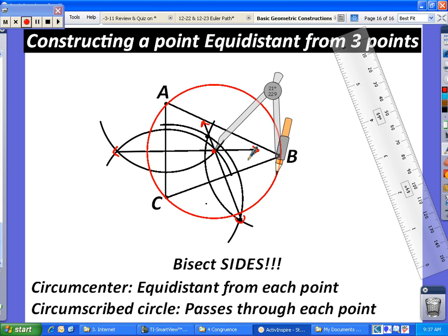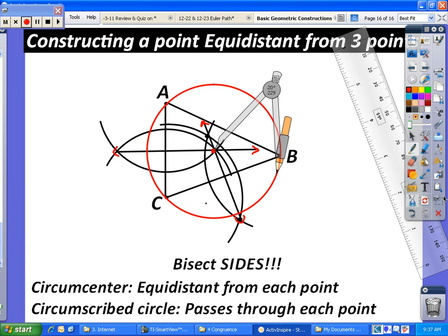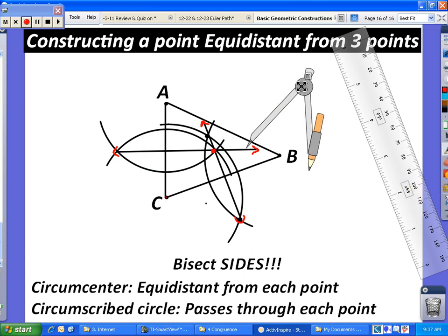So you have done what you called constructing the circumcenter, which is now equidistant from point A, B, and C because they are all on the circle. And I can take away that circle. It kind of helps you see, but really all we're interested in is that point that is the circumcenter.